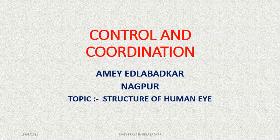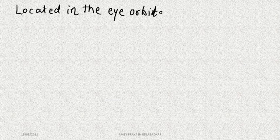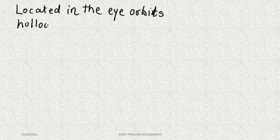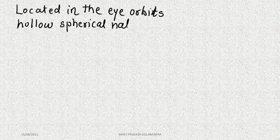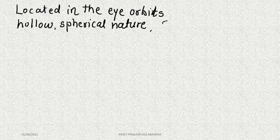Hello students, in this video we shall be studying the structure of the human eye. Eyes are located in the eye orbits, which are bony cases. The human eye is hollow and spherical in nature, almost 2.5 cm in diameter.